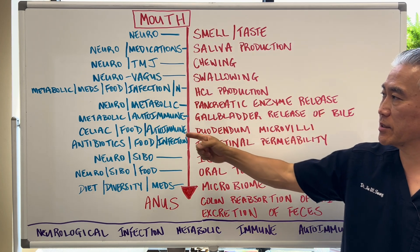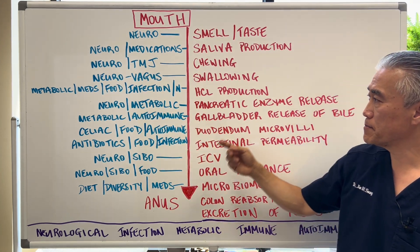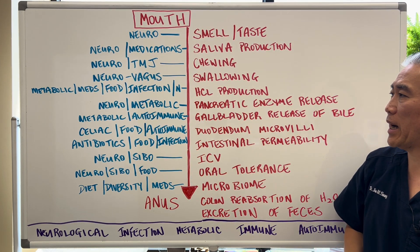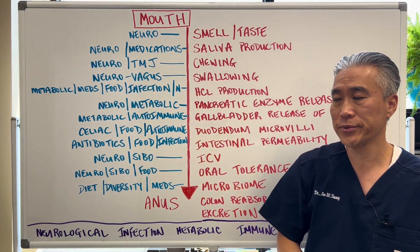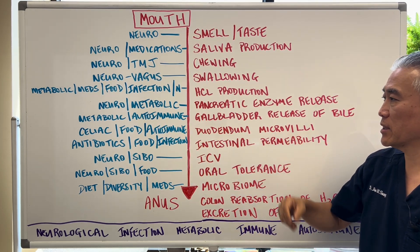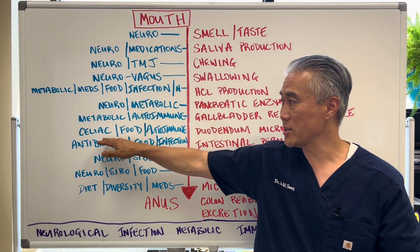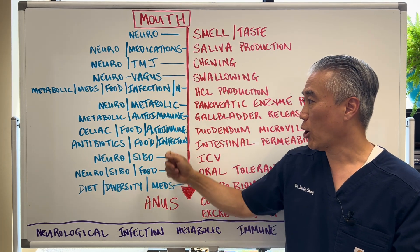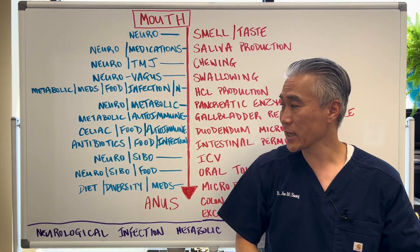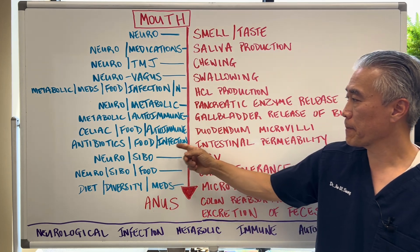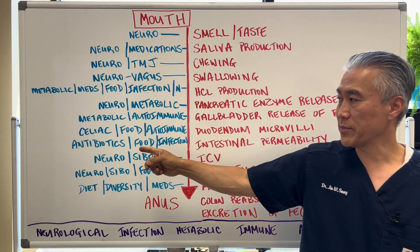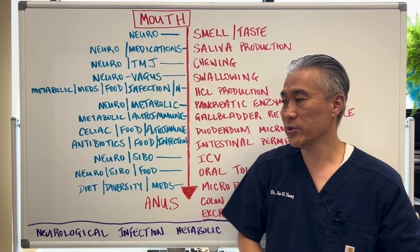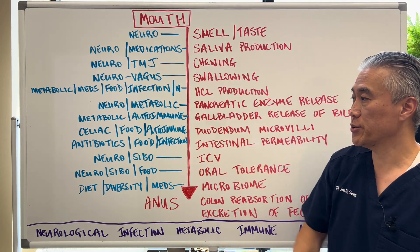Pancreatic enzyme release can be neurologic or metabolic. Gallbladder release of bile is also metabolic or autoimmune. Duodenal microvilli blunting is associated with celiac disease, gluten sensitivity, inflammatory foods, and autoimmunity. Intestinal permeability can be related to overuse of antibiotics, inflammatory foods, or infection.